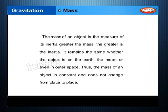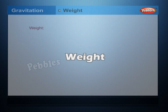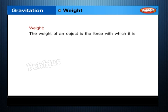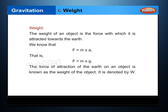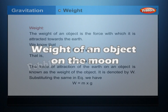Weight: the weight of an object is the force with which it is attracted towards the earth. We know that F = m × a, that is F = m × g. The force of attraction of the earth on an object is known as the weight of the object, denoted by W. Substituting, we have W = m × g.